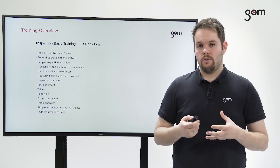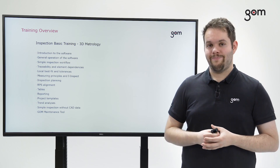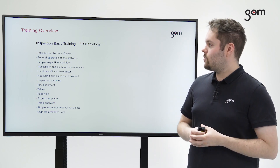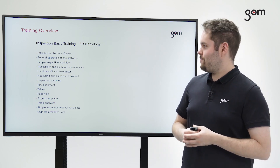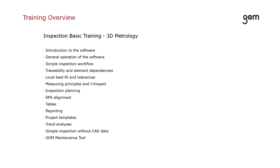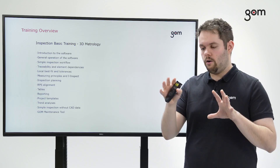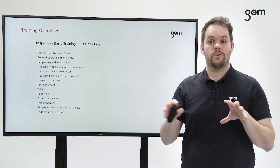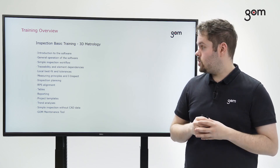We are going to cover all the basic topics, and there are quite a few in this training. We are first going to start with an introduction to the software — what it actually is, what it does, what it is meant to do. Then we will have a look at the general operation of the software, which basically means we are going to have a look at the general user interface and see how all the different elements interact with each other.